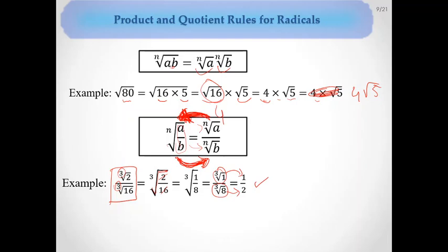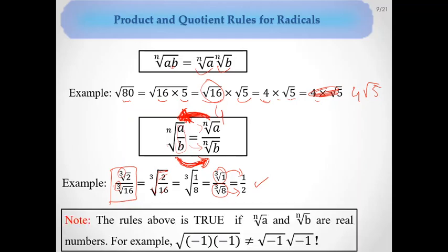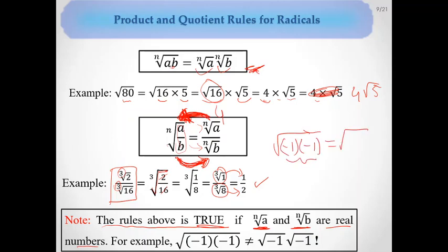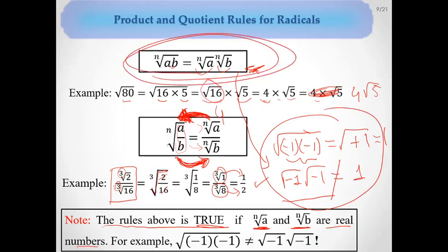One important note: the product and quotient rules only apply when both radicals represent real numbers. For example, you cannot apply the product rule to the square root of (−1 × −1), because the square root of −1 is not a real number. If applying the rule produces non-real numbers, the rule cannot be used.